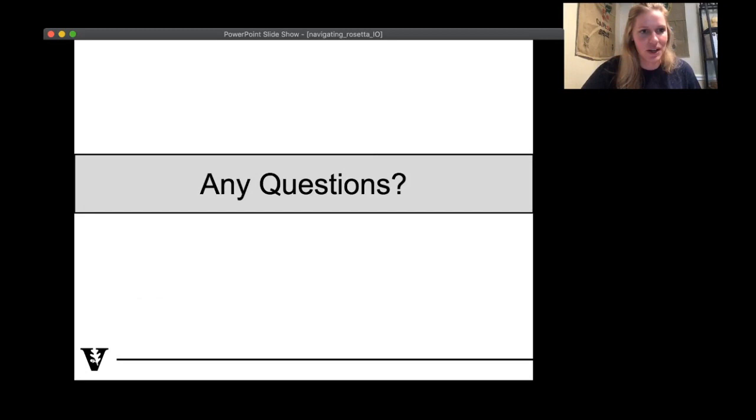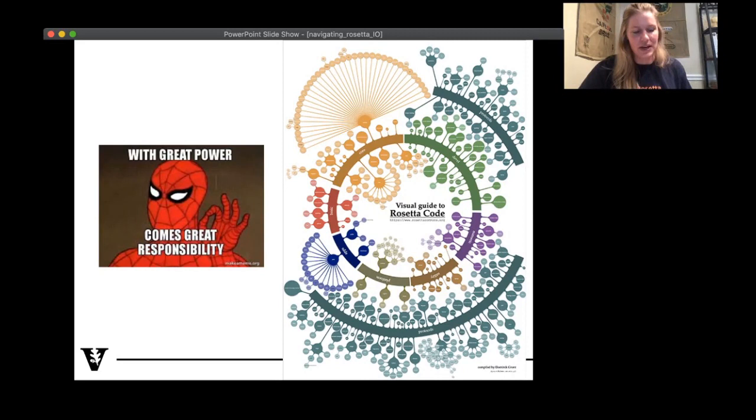So questions, please post in Discord. I would normally be wanting discussion here, but this is virtual. So let's keep pushing on. Okay, so this next part is navigating Rosetta. And the reason that this is important is because Rosetta is huge. And I often say with great power comes great responsibility when it comes to Rosetta. So it's an incredibly powerful program. It can do a lot of different and really cool things. But you also need to know, be responsible with what you're doing.